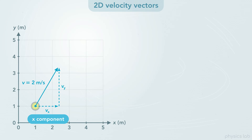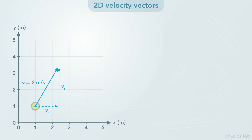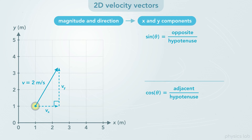vx is the velocity component in the x direction, and vy is the component in the y direction. We do the same thing that we did when we learned about displacement vectors and components. The vector v and its two components, vx and vy, form a right triangle, so we can use the trig functions to convert from the magnitude and direction into the x and y components.